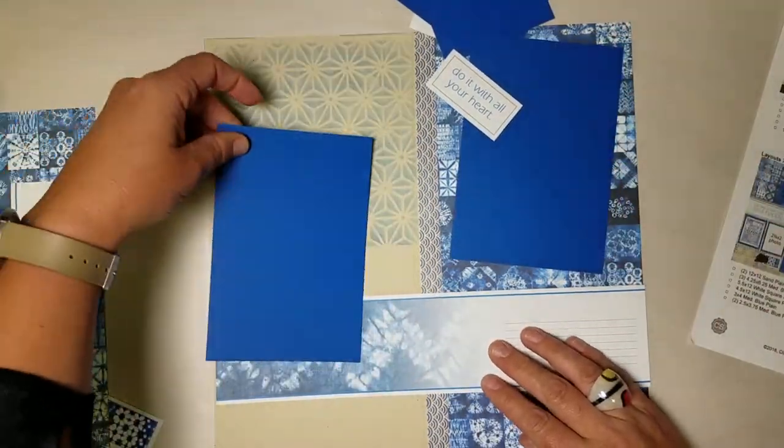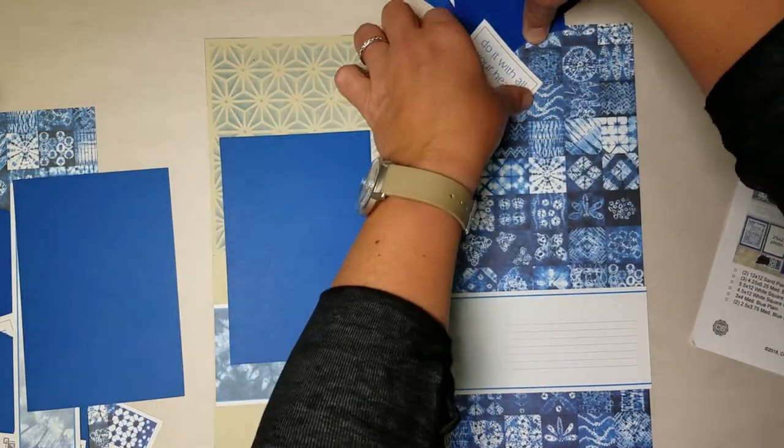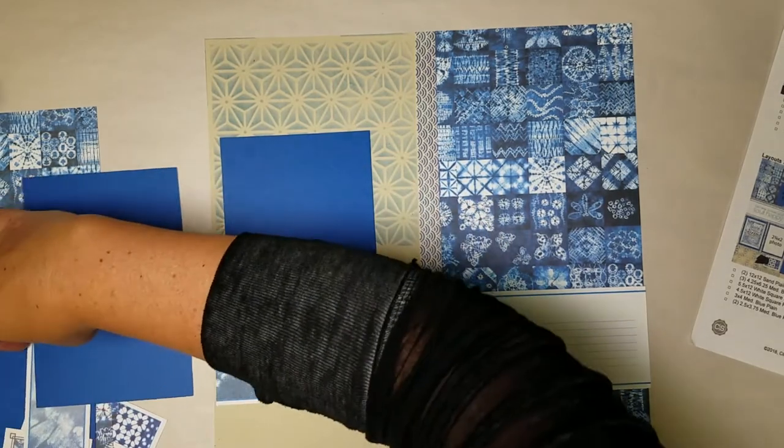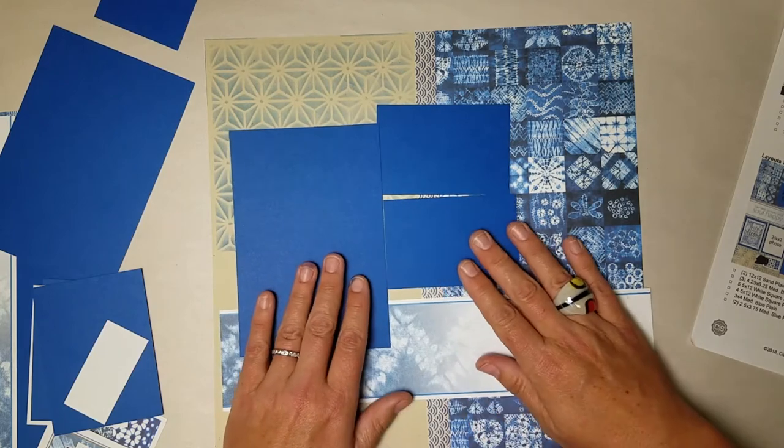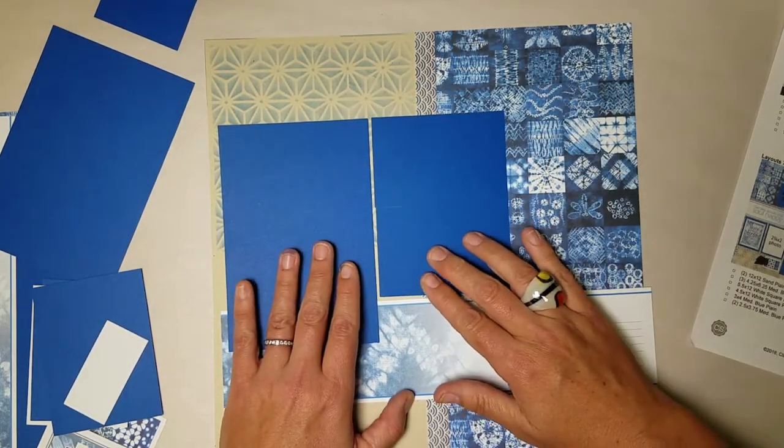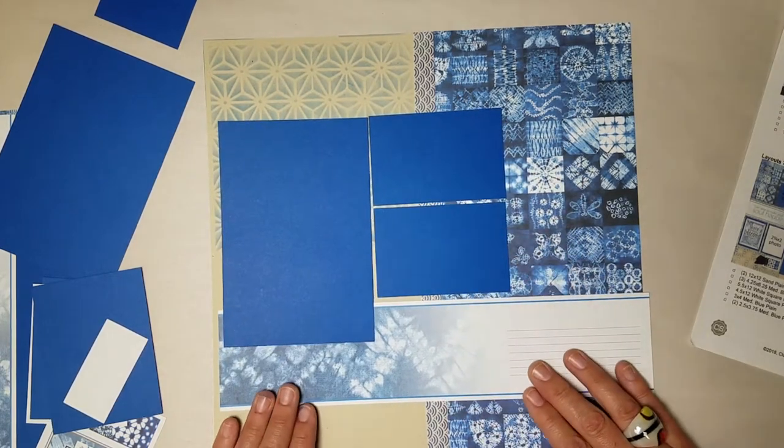So then I follow that with my photo mats. Just one of the larger ones on this side. And then I have two more narrow ones. And the way I set this up was so that the top edge of this narrow mat matched the top edge of the larger one, which beautifully subdivides the space.